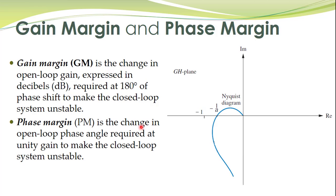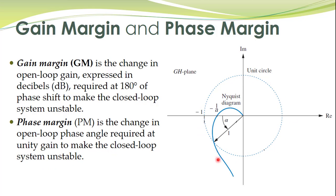Similarly, phase margin is the change in open loop phase angle required at unity gain to make the closed loop system unstable. On the unit circle, the point with magnitude equal to 1 requires an additional angle alpha to shift to the critical point, so alpha is the phase margin.